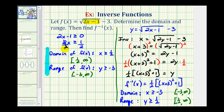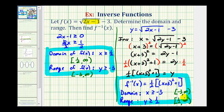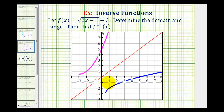Here's the domain of the original function, the inverse function, and its domain and range. To verify graphically: when we graph the function and its inverse on the same coordinate plane, the two functions should be symmetrical across the line y equals x. Here's the graph of the original square root function, here's the graph of the quadratic function with the restricted domain, and here's the line y equals x. Notice how these two functions are symmetrical across y equals x, which verifies they are inverses of one another and confirms our work is correct.